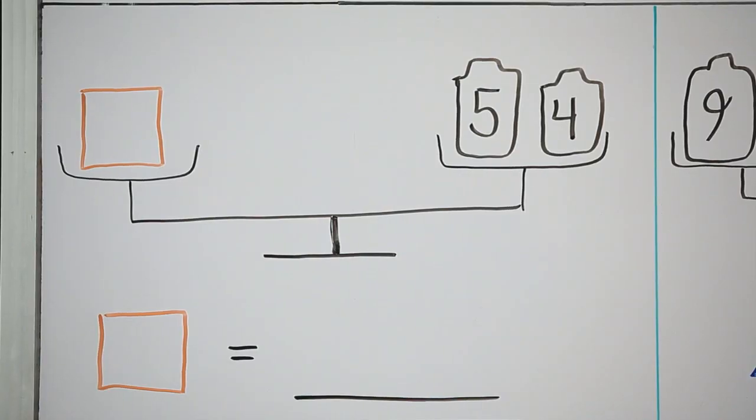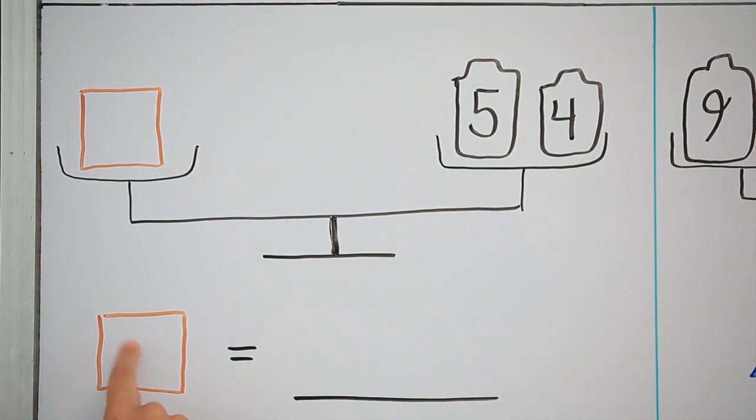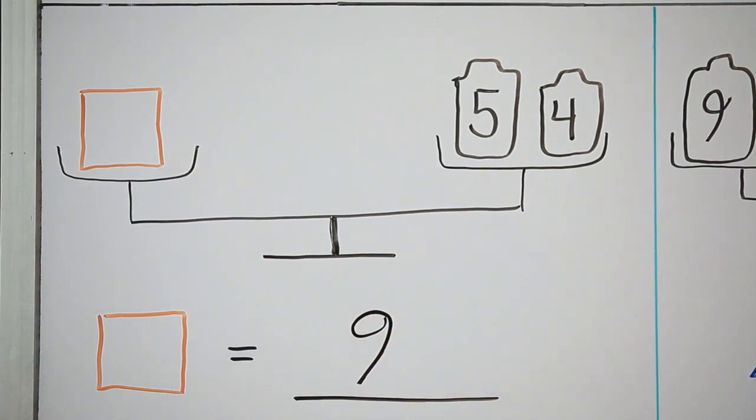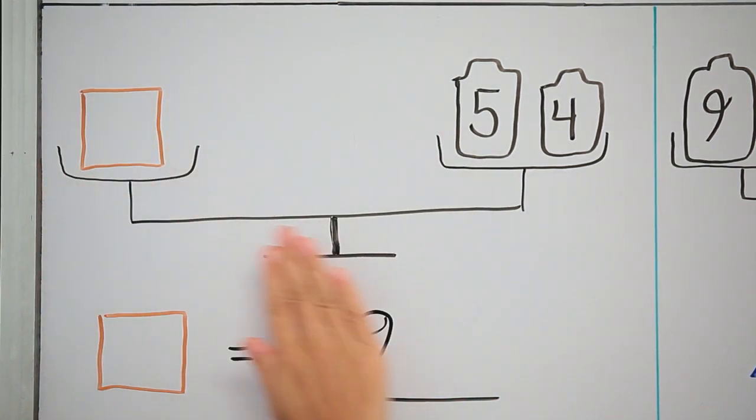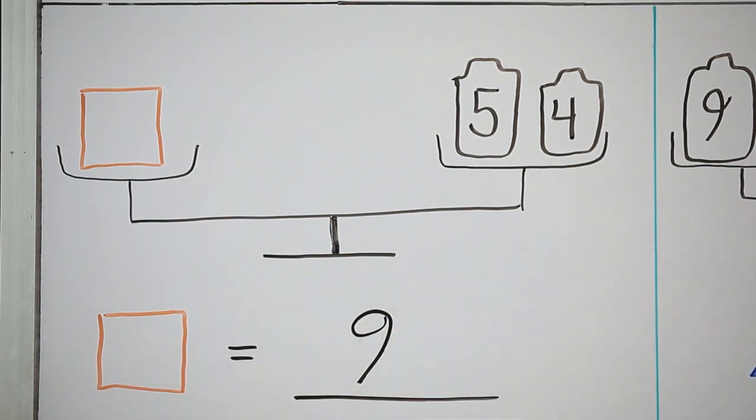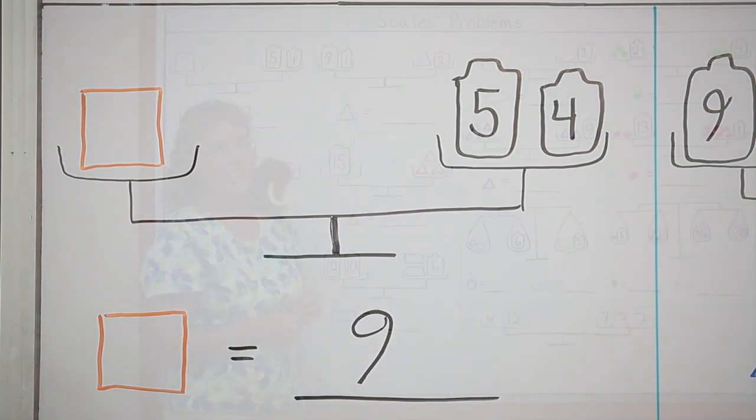Now this first one is very easy. How much does this square weigh? Or is equal to? It's equal to 9. And this whole balance here models for us the equation. If I use x, I would say x equals 5 plus 4. That's an easy one. Let's go to the next one.